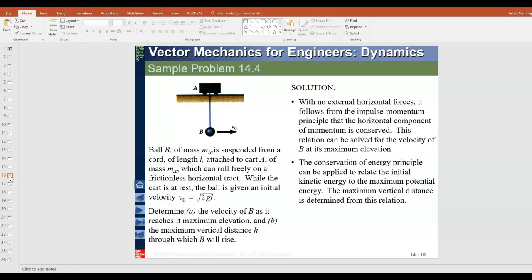So this problem is in your textbook, or a similar problem, where we have a ball attached to a cord of length l, and it's suspended from a cart. So what happens if the cart is initially at rest and the ball is given this initial velocity? What's the velocity of the ball when it reaches its maximum elevation? And what's the vertical distance? So there are no external forces. So this means that the impulse momentum principle is conserved and the relation can be solved for the velocity of b at its maximum elevation. And also the conservation of energy principle can be applied in terms of kinetic energy and maximum potential energy. Because, of course, when the ball reaches its maximum elevation, it will have a zero velocity, the ball itself. And that's going to be relative to the cart at a if a is moving, but it will be at its maximum elevation will be its maximum potential energy at that time.